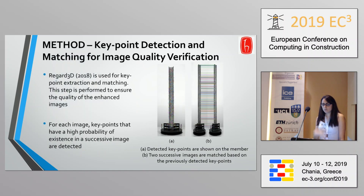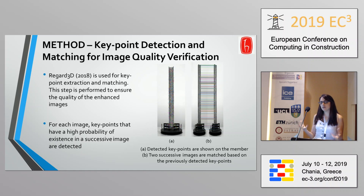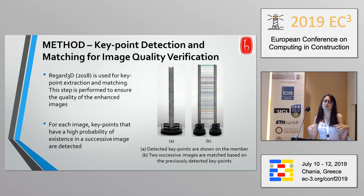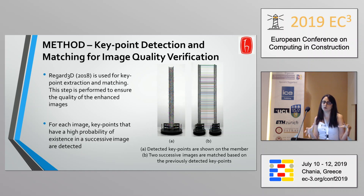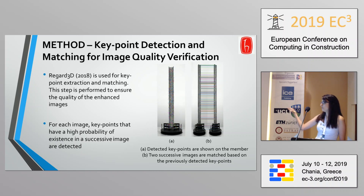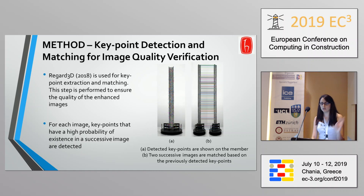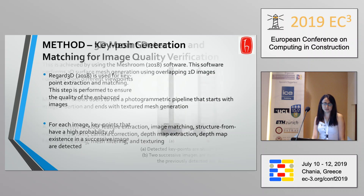The second part of our method was to ensure key point detection so that we can generate the 3D model. We used open source software throughout this process to ensure it's a low cost option for everyone. We wanted to find at least 2000 key points per image to ensure the 3D modeling. On the right hand side in image B you can see how the key points are matched between two successive images taken from the sample.